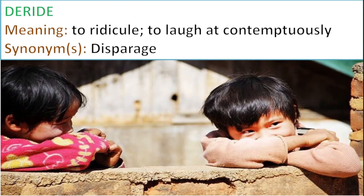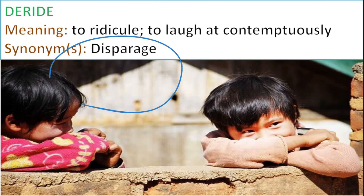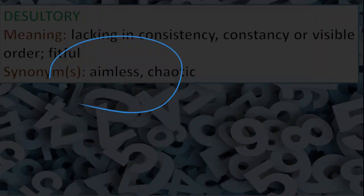Deride — deride means to ridicule or to laugh contemptuously at somebody, or to disparage somebody. Deride comes from de and ride — to ride people means to get onto their case and give them a hard time. To deride is to do the same thing but with insulting language or poor treatment. It comes from the Latin word derider meaning to ridicule or scorn somebody, and is usually used to express dislike or even hatred. Politicians often deride each other in their speeches during election campaigns.